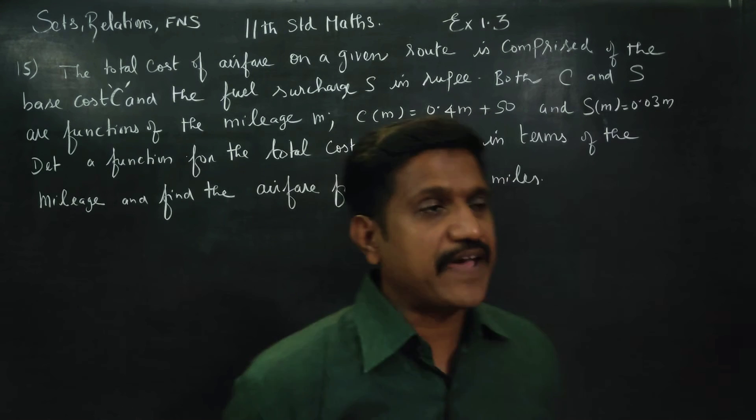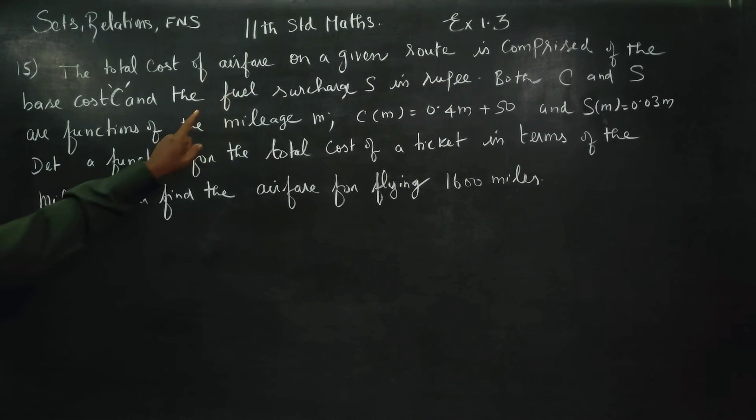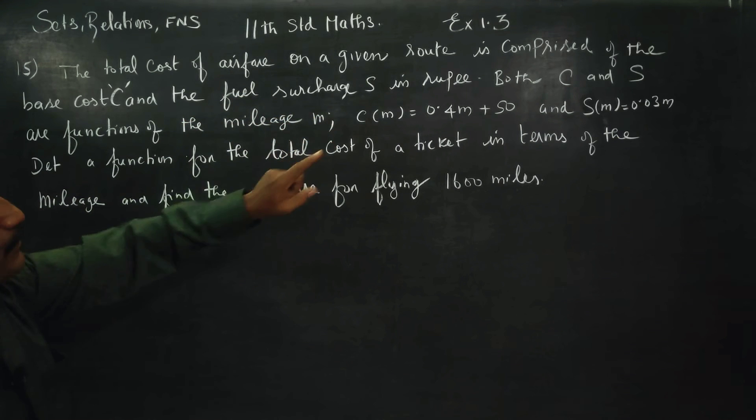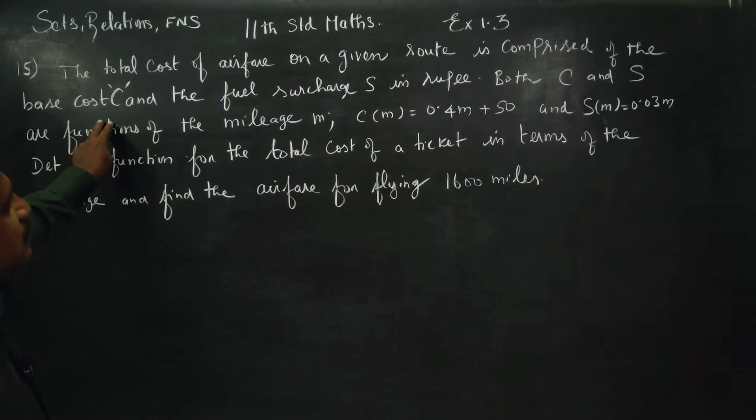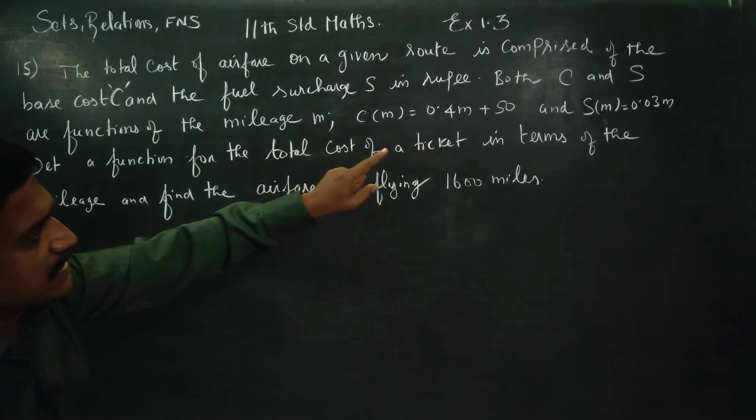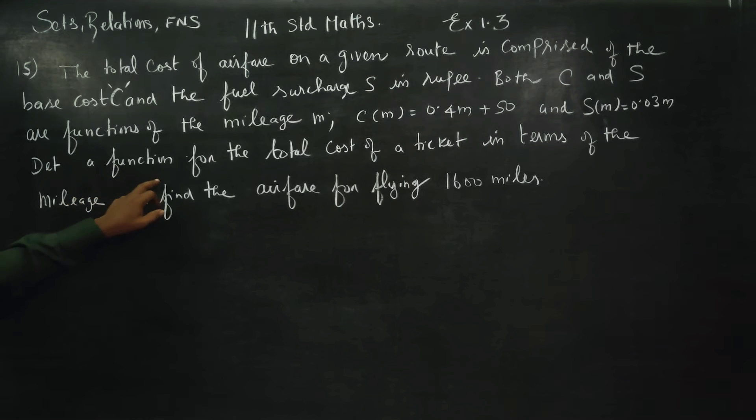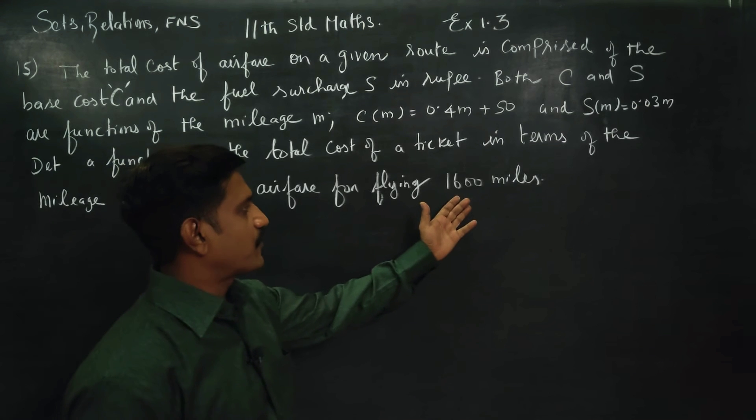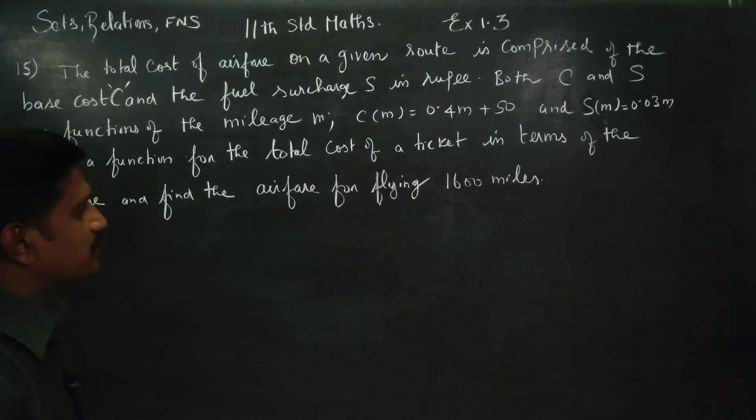The total cost of airfare on a given route is comprised of base cost and fuel surcharge in rupees. Both C and S are functions of the mileage, C of M and S of M. Determine a function of the total cost of a ticket in terms of mileage and find the airfare for flying 1600 miles.